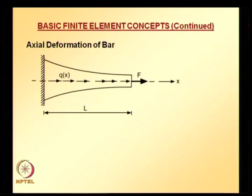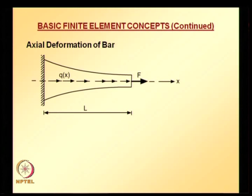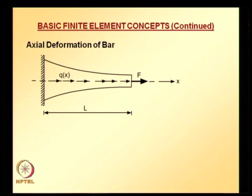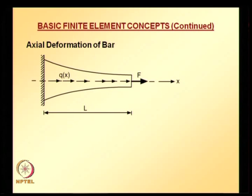For that, I have taken a simple example: axial deformation of a bar, and here for generality the cross sectional area of bar is taken to be varying. As indicated in the figure, the x-axis is measured from the left side where x equals 0, to the right side where x equals L. At the right side there is a point load applied F, and a distributed load is over the entire length of the bar. The material property and cross sectional areas are also assumed to be functions of x — this is the general case.